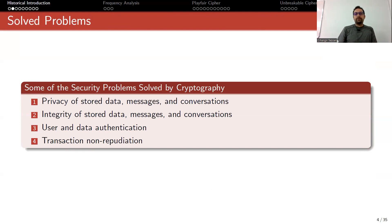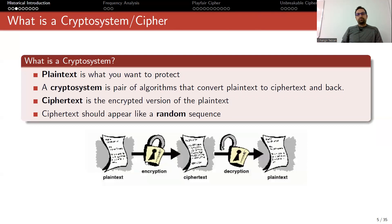Cryptography solves a lot of problems in computer science or the digital world. We want privacy of stored data, messages, and conversations. We want integrity of stored data, messages, and conversations. The first is solved by encryption algorithms - we can provide confidentiality easily. For integrity we have hash functions, message authentication codes, etc. We also solve the problem of user and data authentication and transaction non-repudiation with digital signatures.